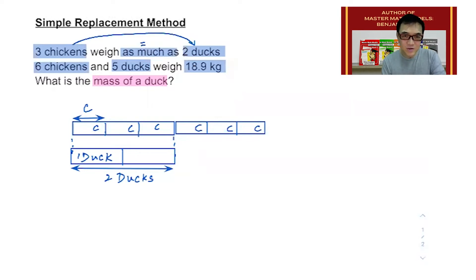Now, if these 3 chickens are equivalent to 2 ducks, then in the same way, these 3 chickens should be equal to 2 more ducks. I'm going to add 2 more boxes below to represent the 2 more ducks. Right now, I have a total of 4 ducks.